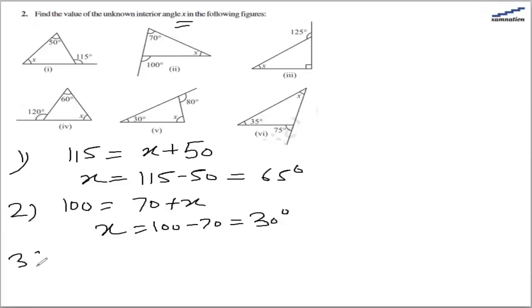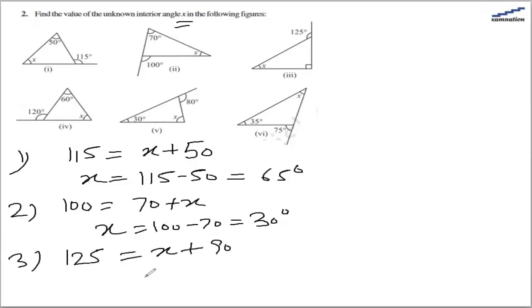In the third part, the exterior angle is 125 degrees, and the interior opposite angles are x and 90 degrees. From here, x equals 125 minus 90, which is 35 degrees.